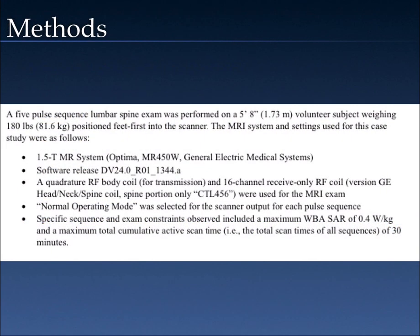The data was performed on a volunteer who was about 5 feet 8 inches and weighed around 180 pounds. They were positioned feet first into the scanner. It was a 1.5 Tesla GE Optima 450W system — a 70 centimeter bore using software release DV24. We used the integrated RF body coil for transmission and the 16 channel receive-only RF coil, which GE refers to as their head-neck-spine coil. We specifically selected the spine portion only, labeled CTL456 for the multi-coil configuration.